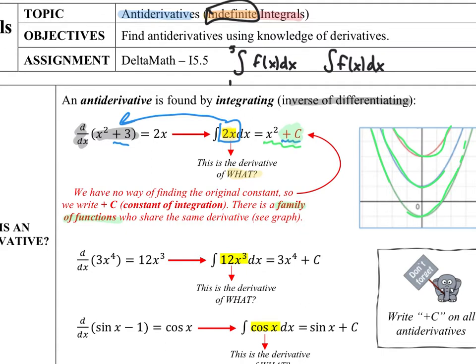The family of functions is represented in the graph — they're all the same, just with a different vertical shift. They all have the same derivative, because if I do the derivative of x squared plus c, it doesn't matter what c is — it becomes zero anyway, and the derivative is still 2x. All of these graphs, and there's an infinite number of others, will all have a derivative of 2x.